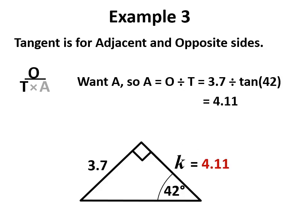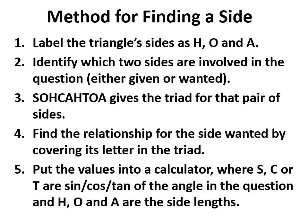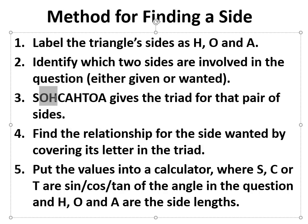Just to revise: we label the triangle sides H, O, and A. We identify which two are involved in the question. SOHCAHTOA then tells us which of sin, cos, and tan to use. O and H relate to sin, A and H relate to cos, O and A relate to tan.